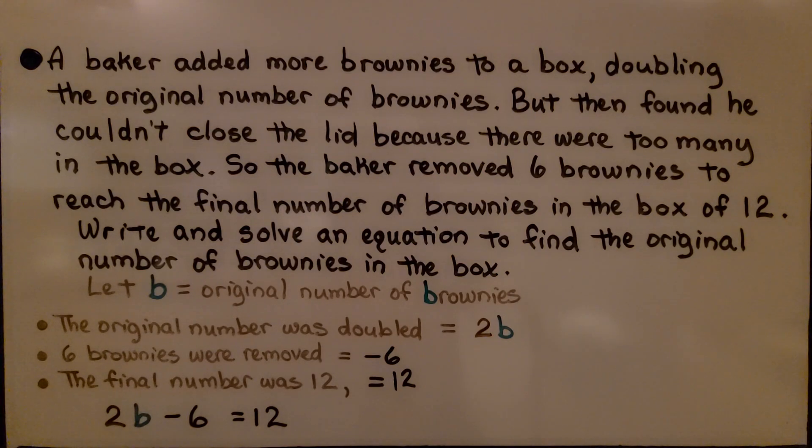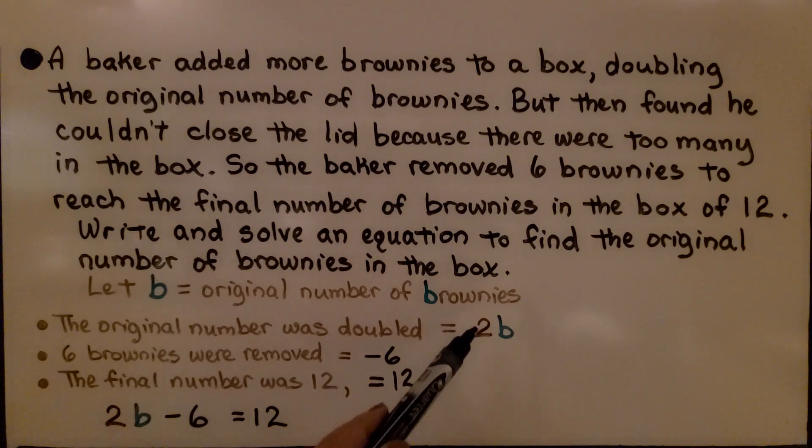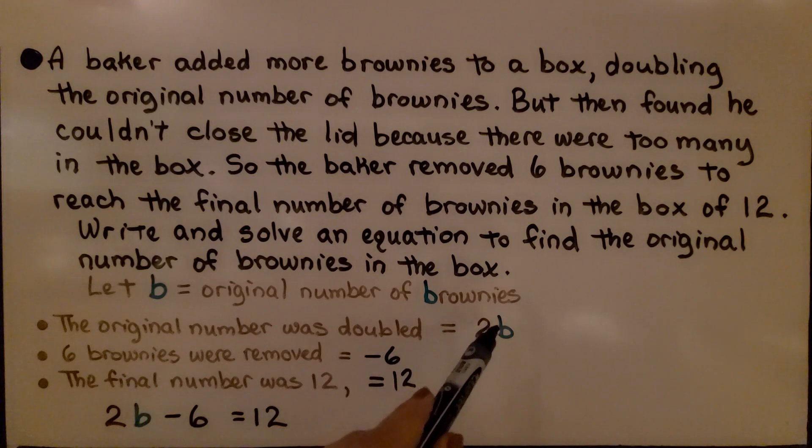A baker added more brownies to a box, doubling the original number of brownies. But then found he couldn't close the lid because there were too many in the box. So the baker removed 6 brownies to reach the final number of brownies in the box of 12. Write and solve an equation to find the original number of brownies in the box. Let b equal the original number of brownies. The original number was doubled, so that's 2b. Six brownies were removed, so we have minus 6. And the final number was 12, so equals 12. Our equation is 2b minus 6 equals 12.